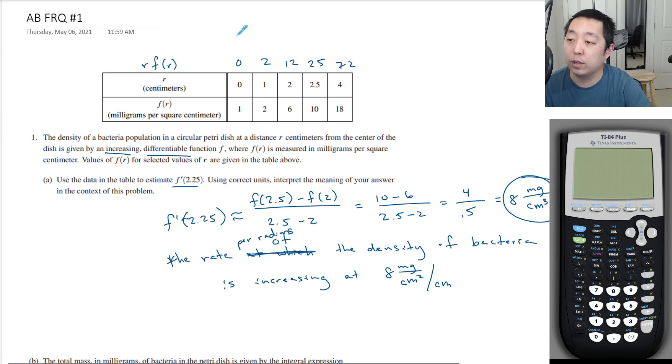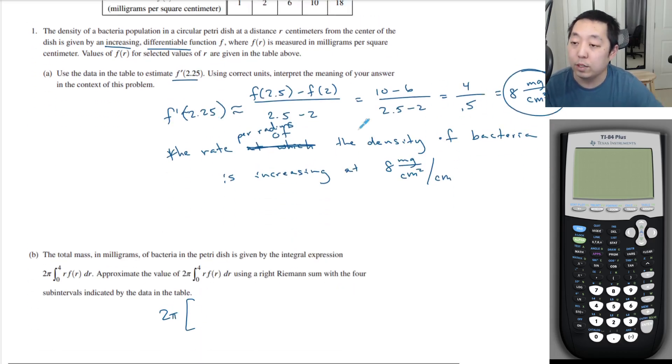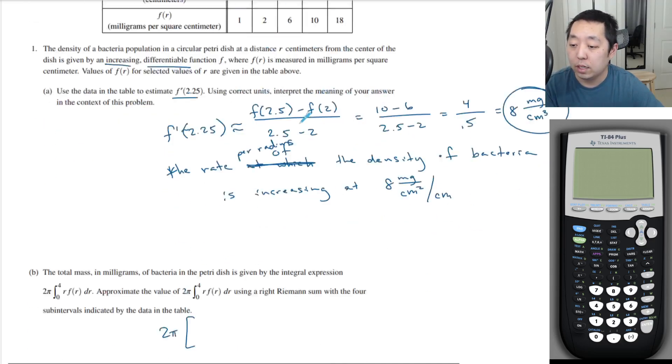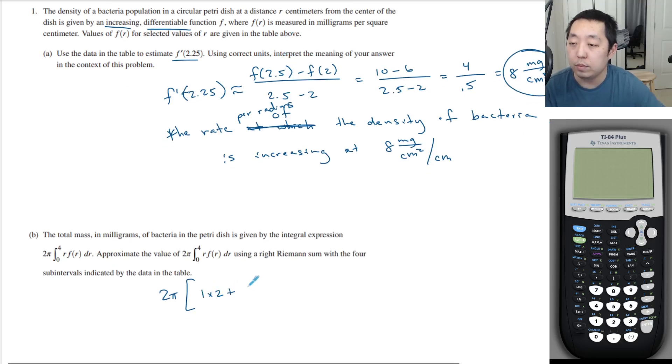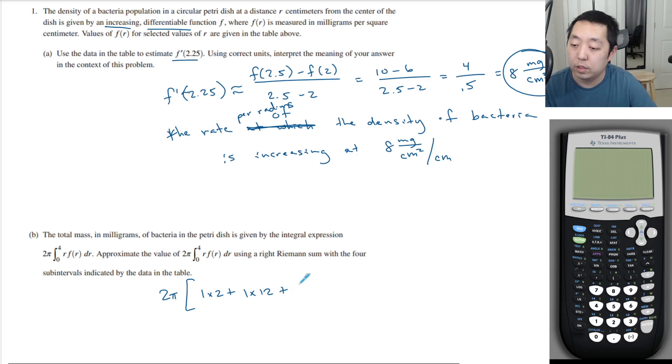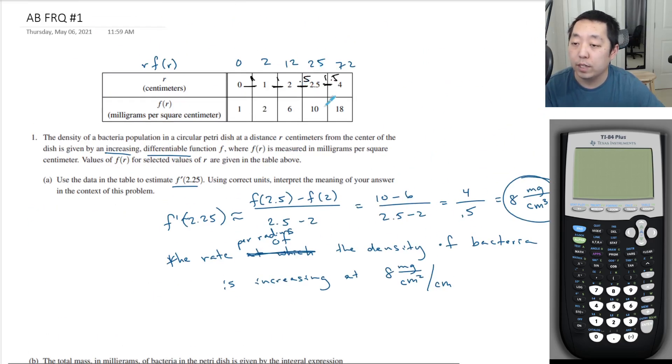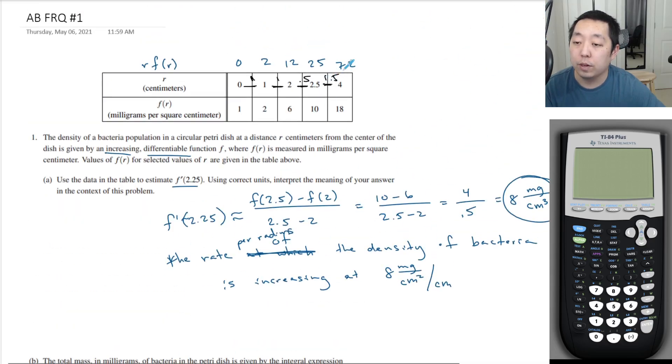So then we're going to do our normal intervals. So, this is an interval width of 2, oh, oops, in terms of r. This is an interval width of 1, this is an interval width of 1, this is an interval width of 0.5, and this is an interval width of 1.5. So, my total Riemann sum is going to, so this is going to be 2 pi times, I have to do my widths, so 1 times 2, 1 times 2, then this width is 1 times 12, then this width which is 0.5 times 25, and then 1.5 times 72.